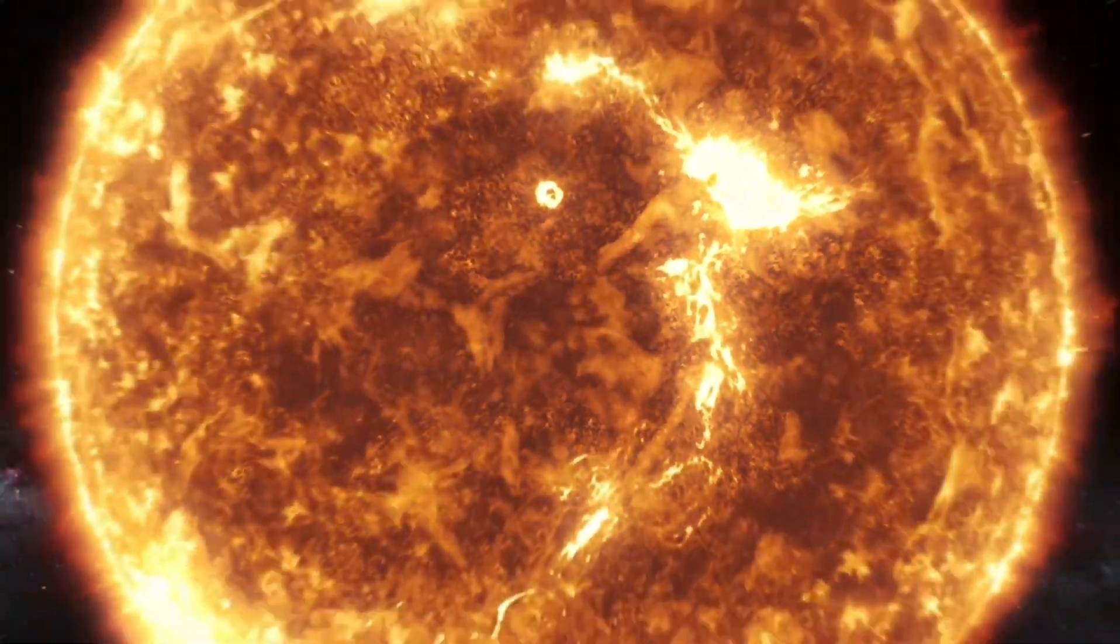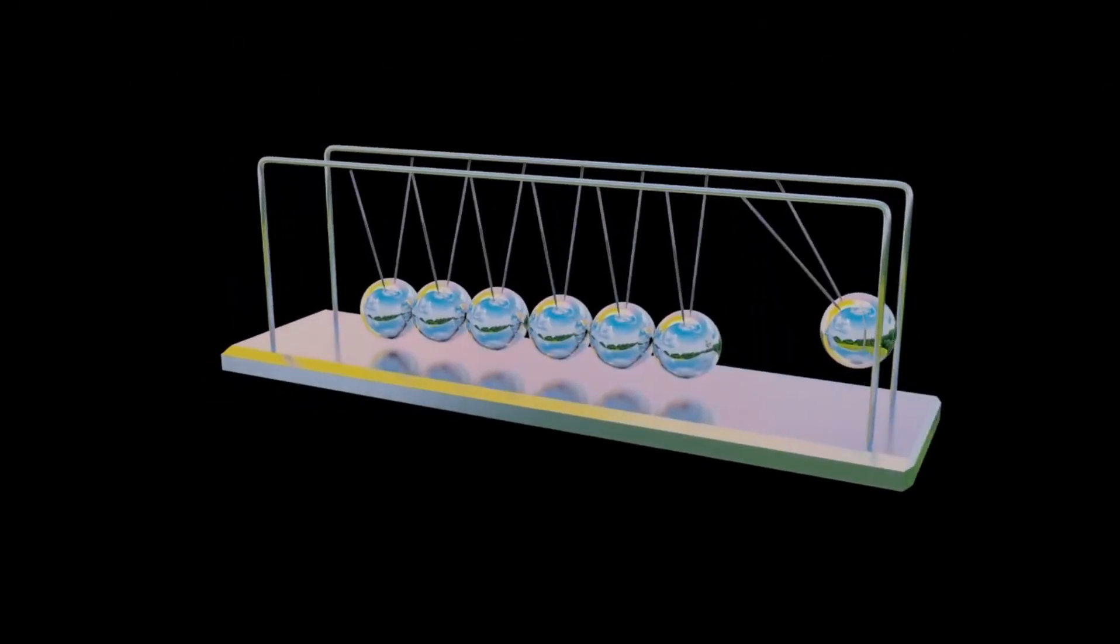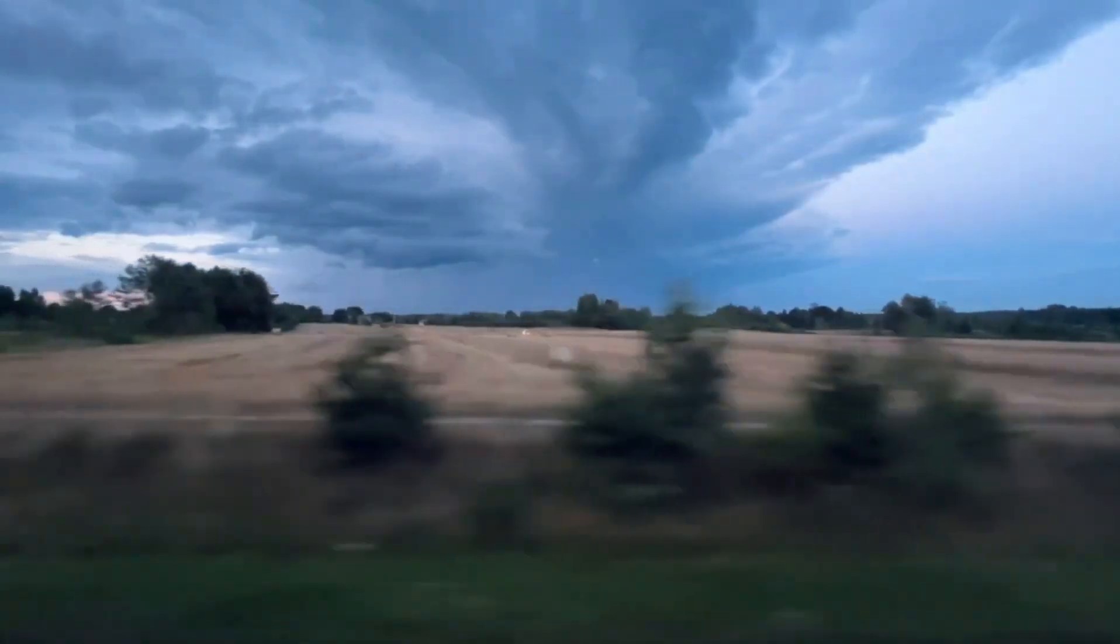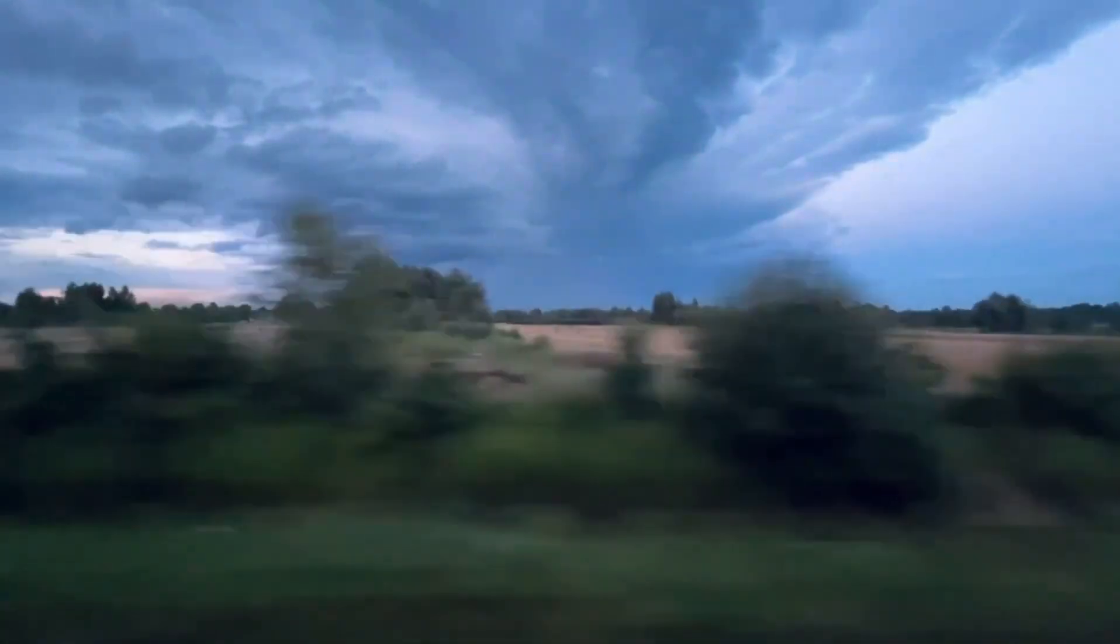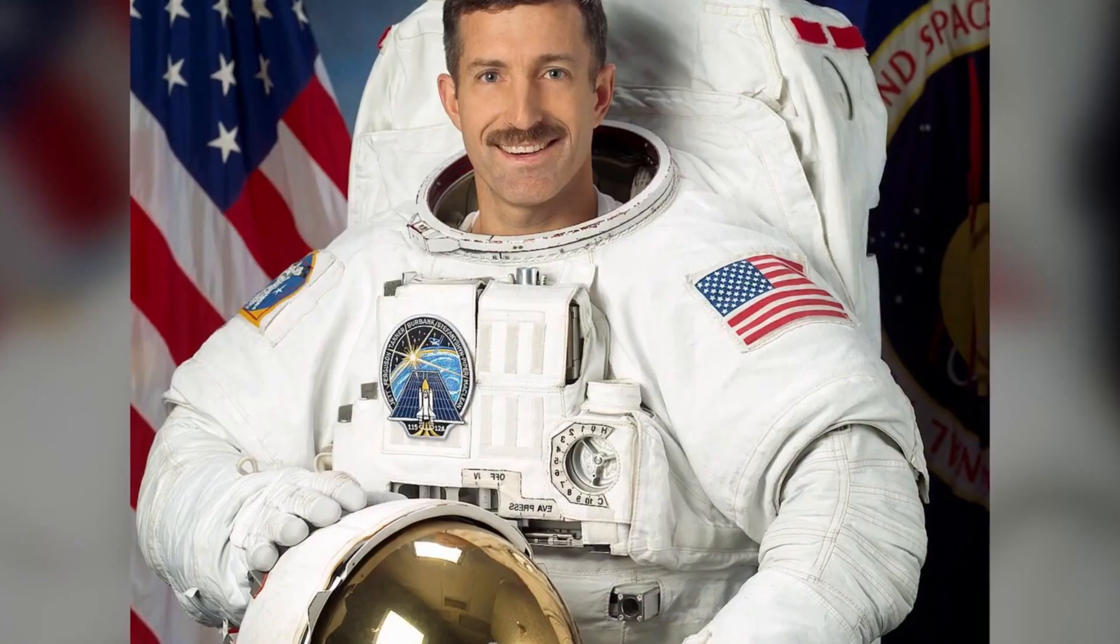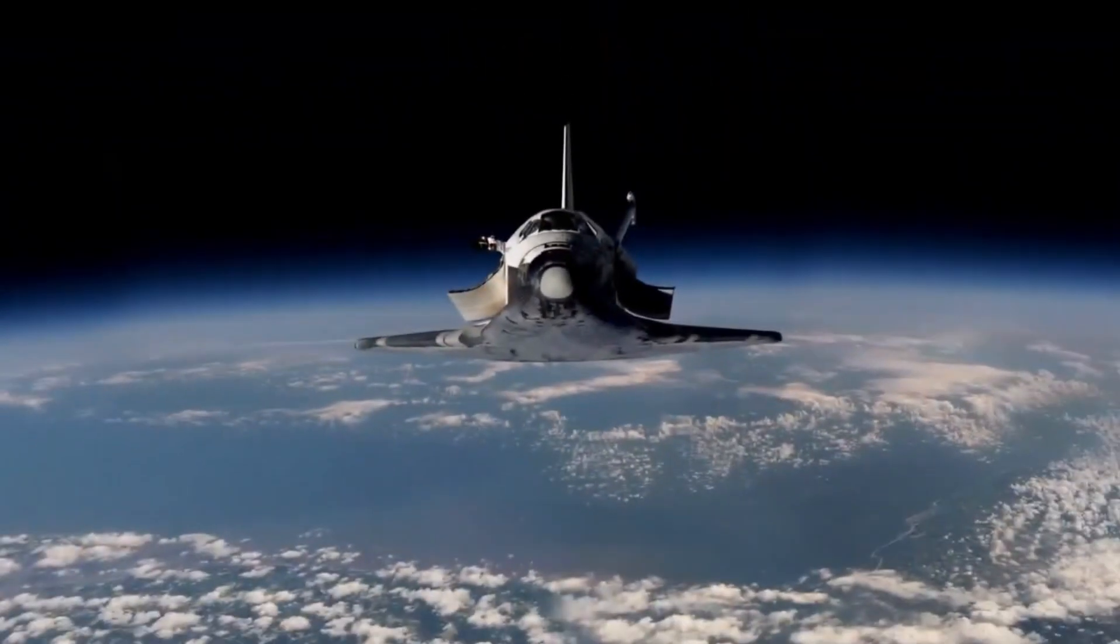Conjecture suggests that the center of the storm must be deeper than assumed, with some researchers speaking of a depth of hundreds of kilometers and others of thousands. Since Saturn is a gas giant, its equator rotates much faster than the poles, creating the Coriolis force which could be the trigger for such a storm.